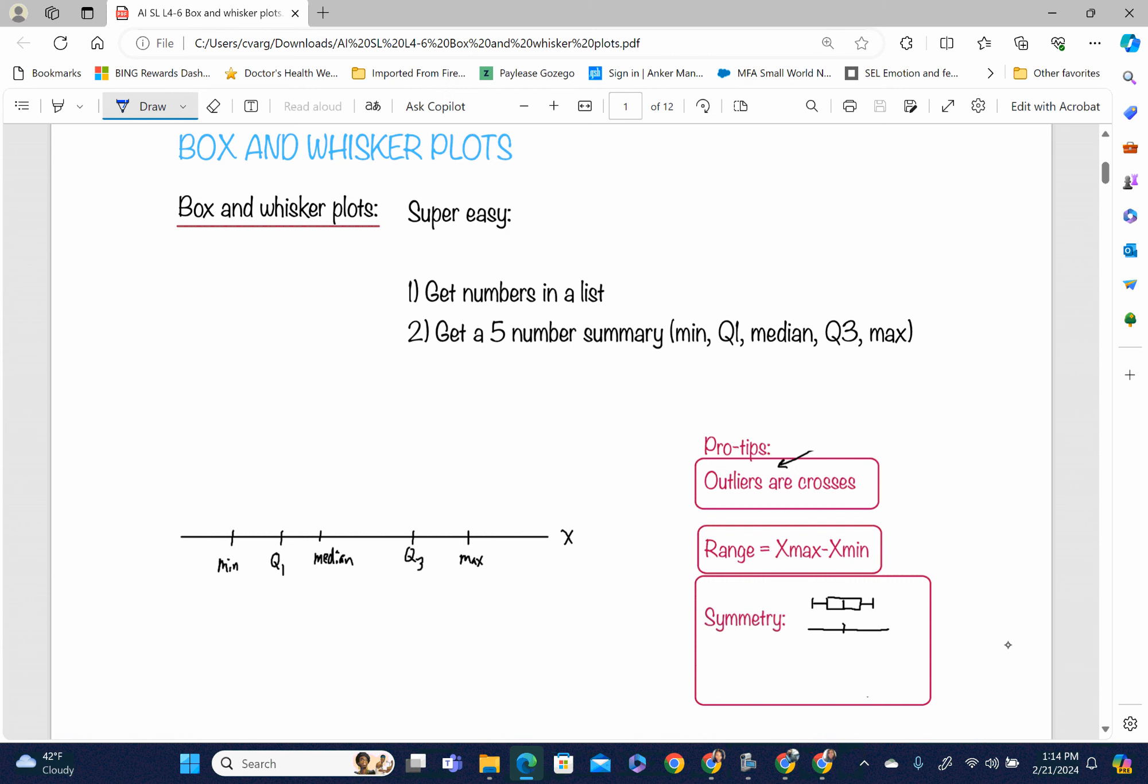This is Lesson 6: Box and Whisker Plots. What we need to remember about a box and whisker plot is we need to get the five number summary. We have to put the numbers into the list. You hit STAT, go to EDIT, put the numbers into the list, and then you go to STAT.